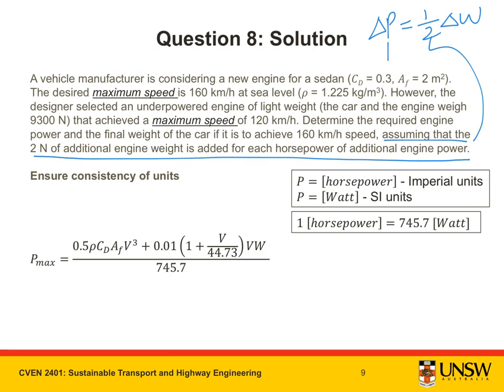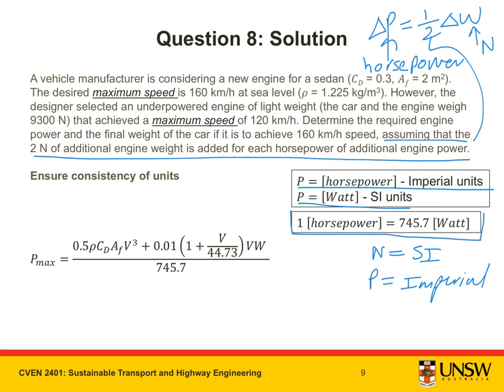We know that Newtons is an SI unit, but P is not. It's an imperial unit. Because horsepower is an imperial unit. The SI unit for power is watt. And we know that one horsepower equals 745.7 watts. Therefore, we need to convert P_max from SI units to imperial units. I will divide it by 745.7 so that P_max is now in horsepower.